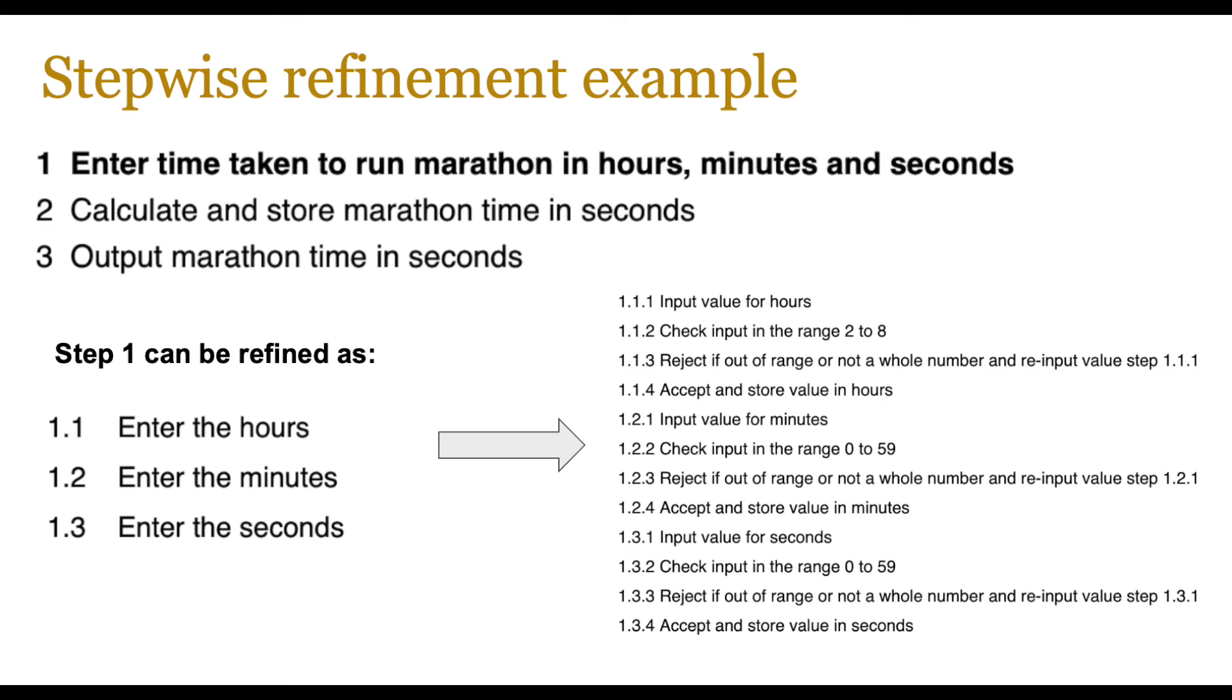Step one itself, enter the hours, enter the minutes, enter the seconds. You can refine that into three steps. And then you can further refine those steps into perhaps inputting the value for hours, checking input is in the range of two to eight, because that's normally the time that somebody takes to run a marathon, and reject any out of range data, or something which is not a whole number, repeat and go back to step 1.1.1, then accept and store any reasonable value, then you do the same thing for minutes, and then you do the same thing for seconds.